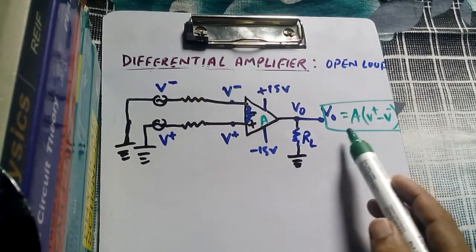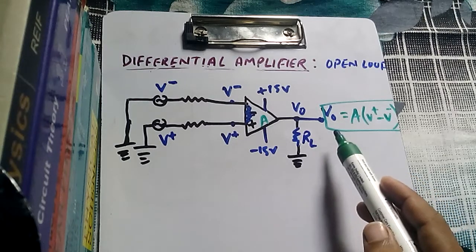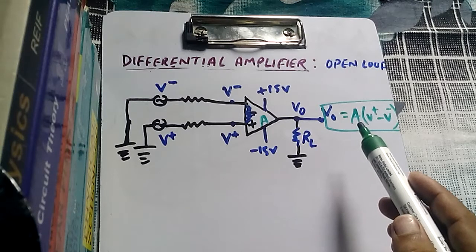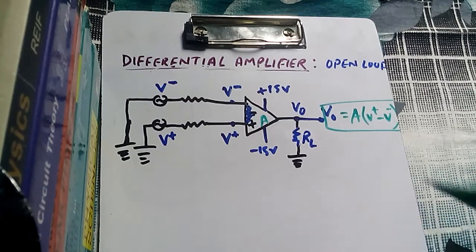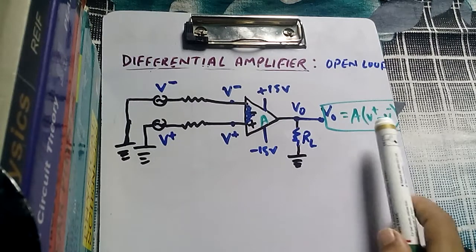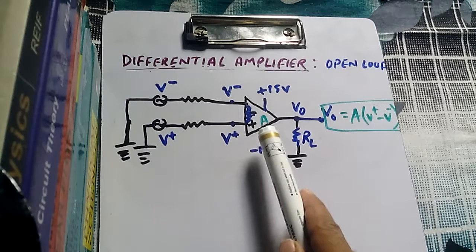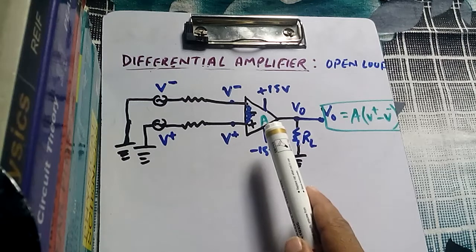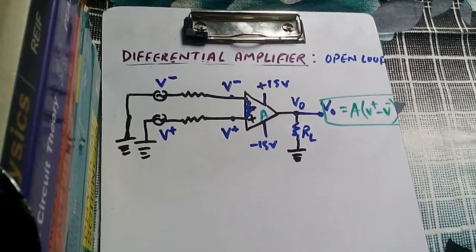Always remember that circuits with open loop are not used practically because we don't have any control over the gain and therefore no control over the output — you are not getting the output according to your wish. This is similar to the inverting amplifier and non-inverting amplifier cases, where the open loop condition is not used practically. It is only the condition with feedback that is used practically. In open loop, the gain is whatever has been specified by the manufacturer and is very huge — that is why it is called the open loop gain. So this is our differential circuit with open loop.